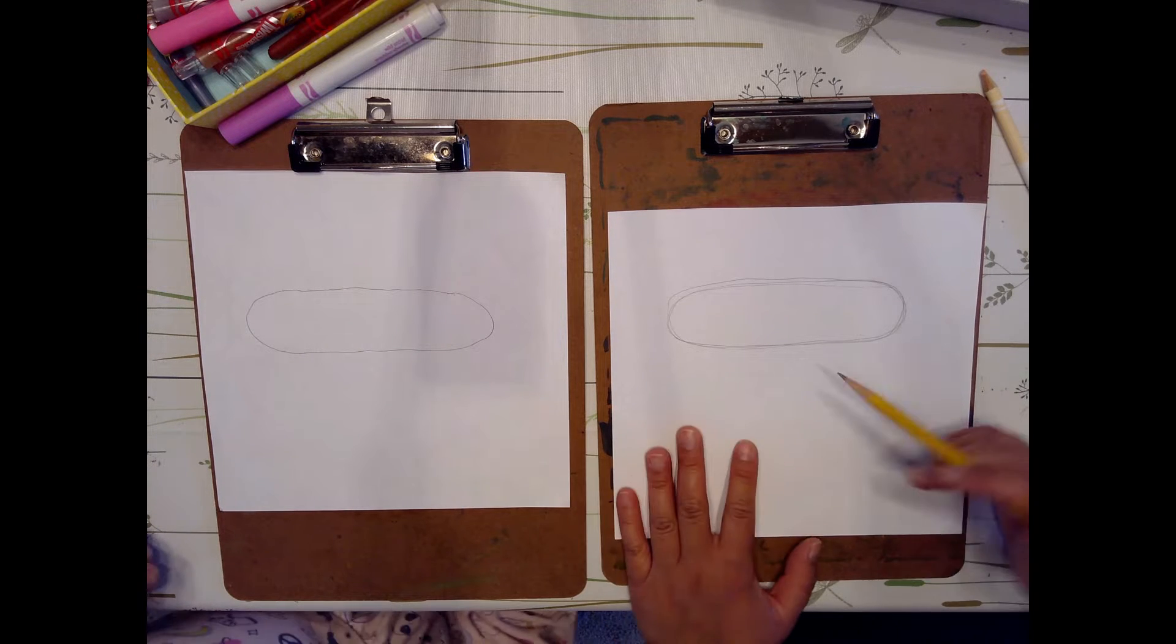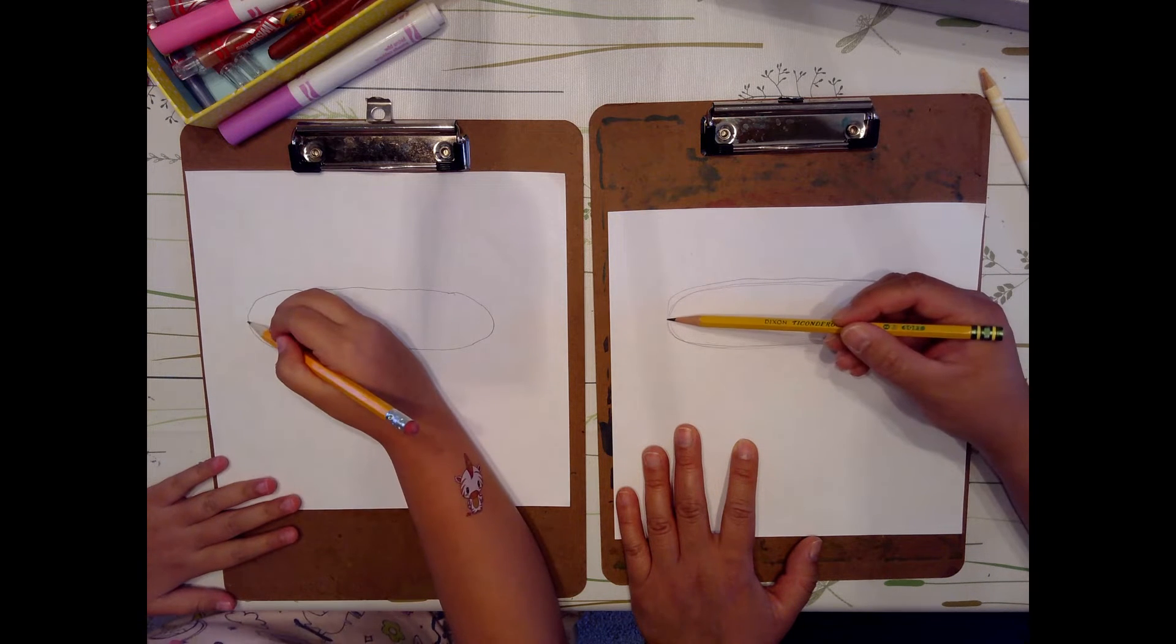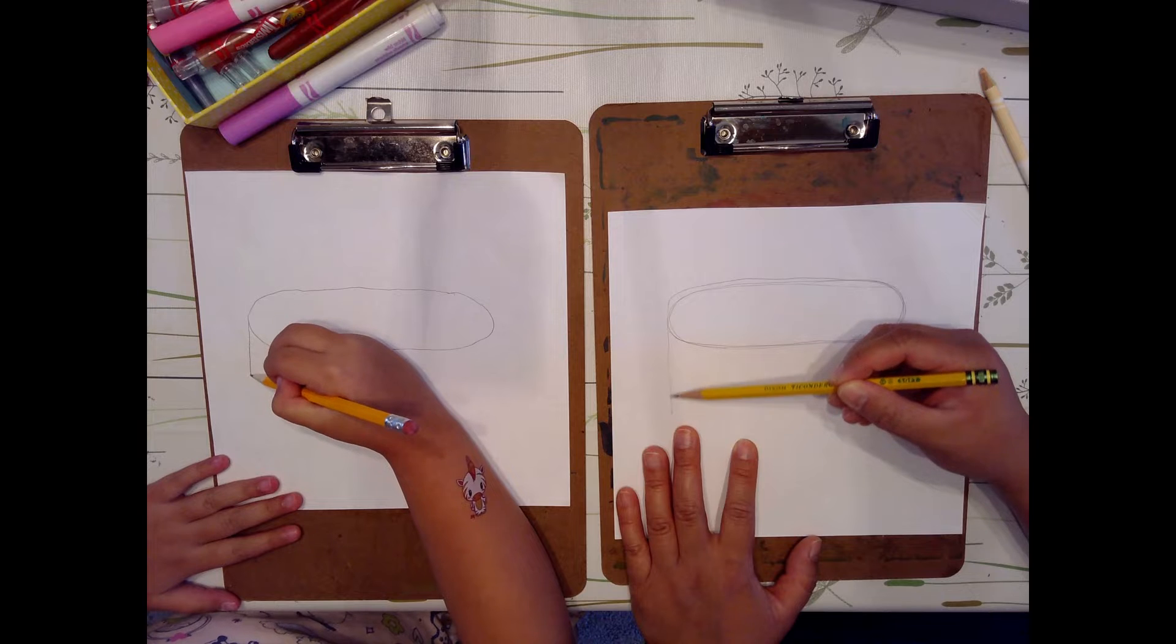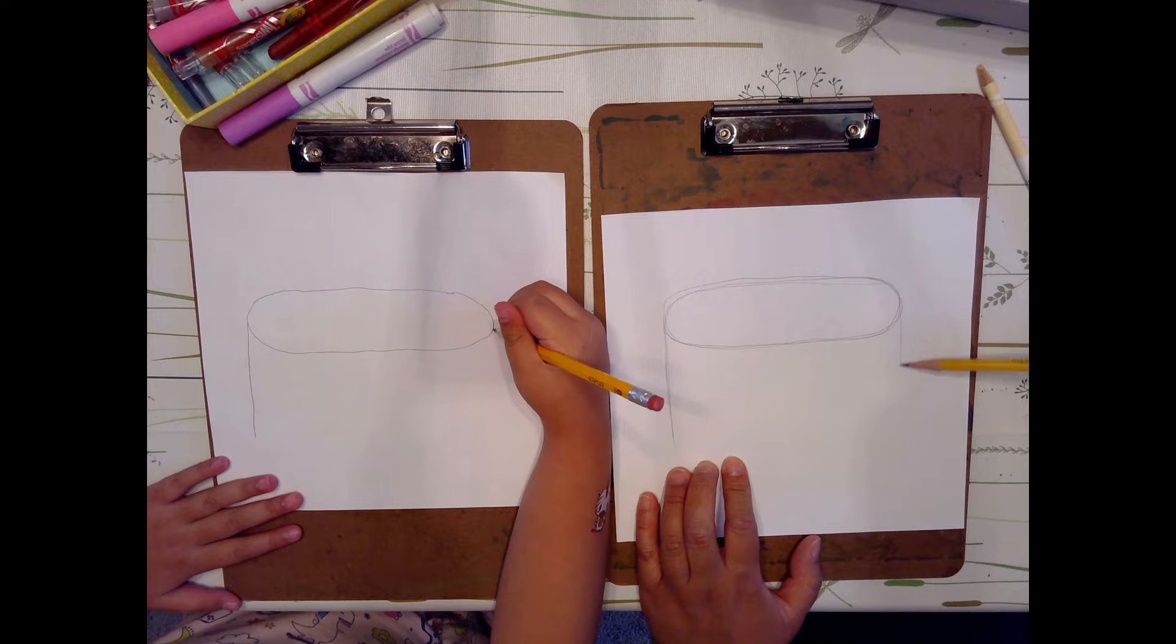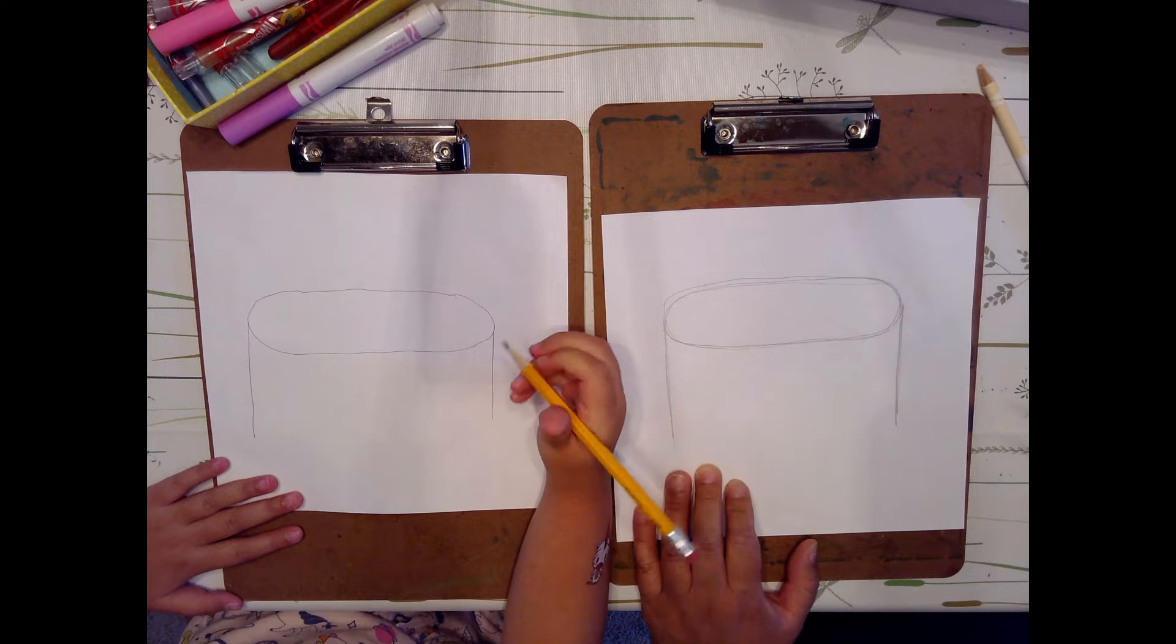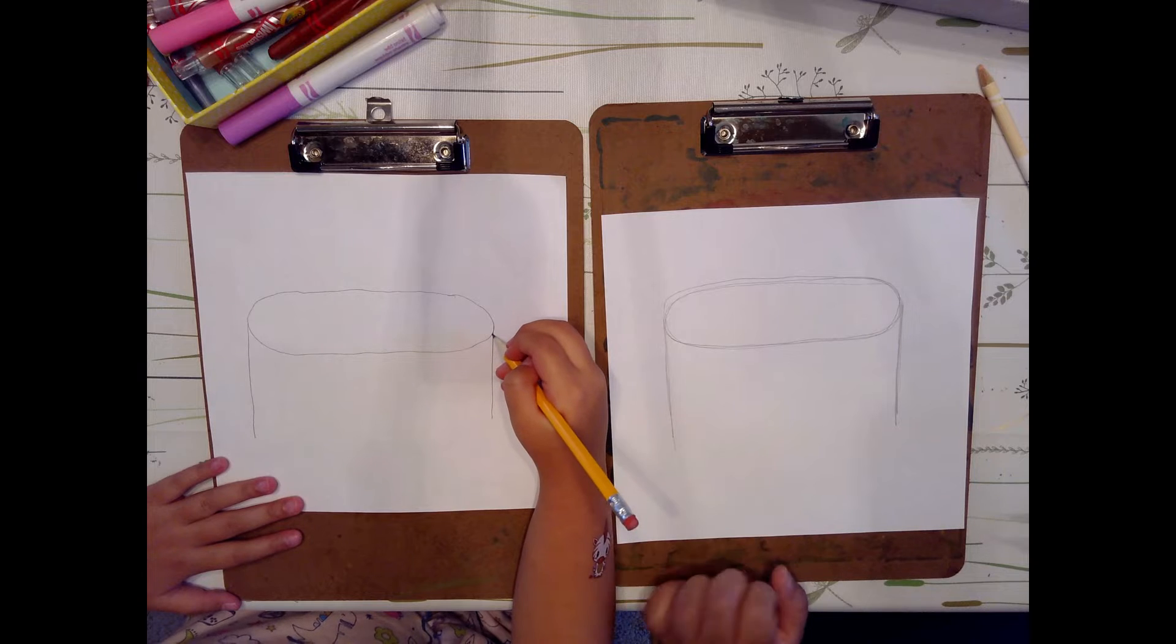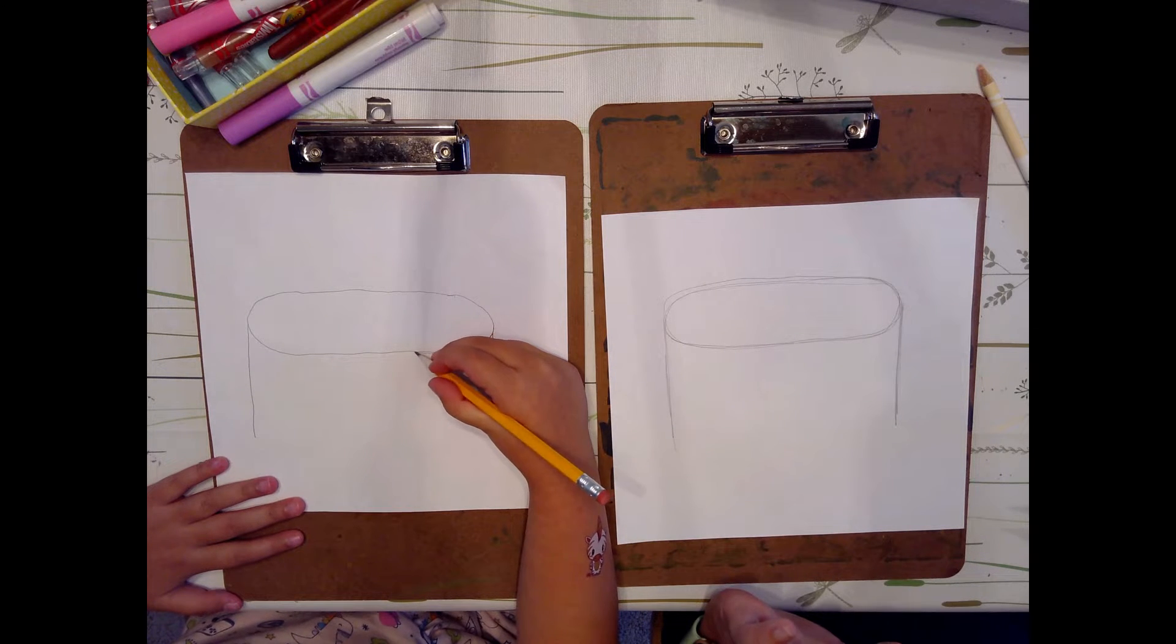The next thing we're going to do is draw two lines on either side of that hot dog, vertical lines going straight down. Again, we're doing it lightly because we might have to erase it if we make a mistake. That's why we're using a pencil first. So far, it just looks like a normal cylinder.